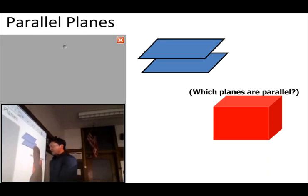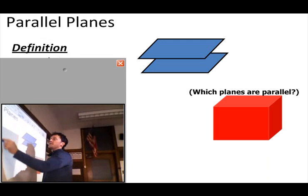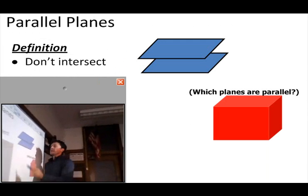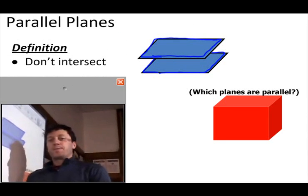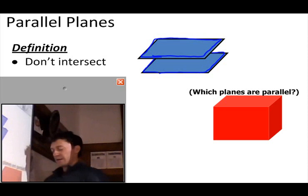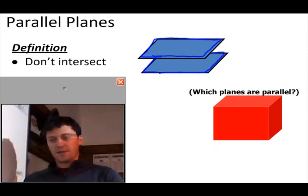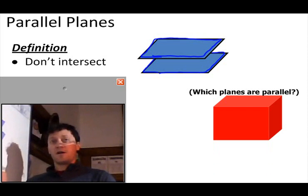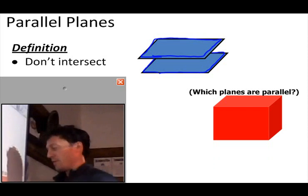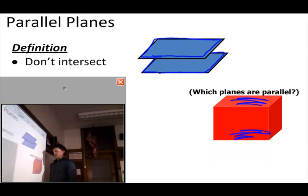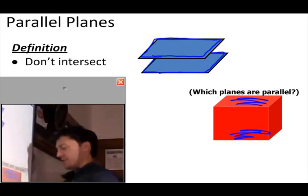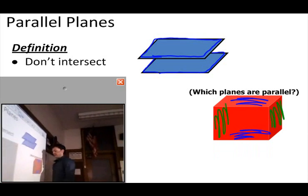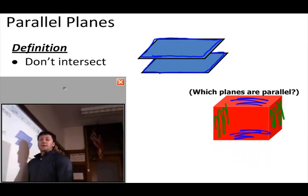Now we've got parallel planes. Parallel planes simply don't intersect. I've got this one blue plane up here and another blue plane right below it — they're never going to intersect. If you think of this red box, the top and the bottom of the box are parallel planes because they're never going to intersect. This side, this side, and this side over here are also parallel planes.